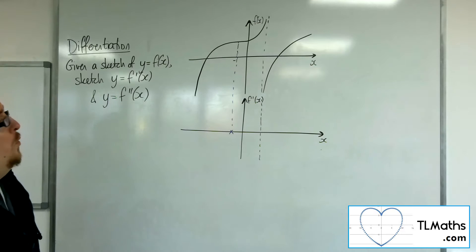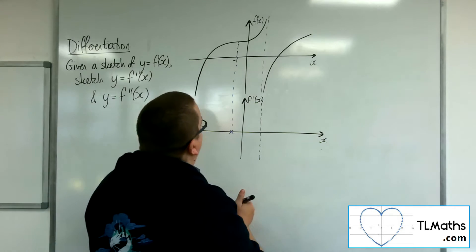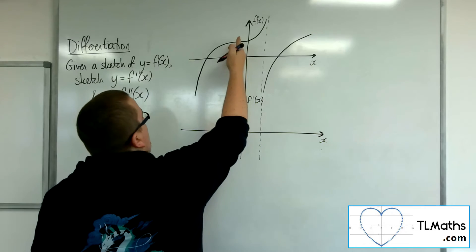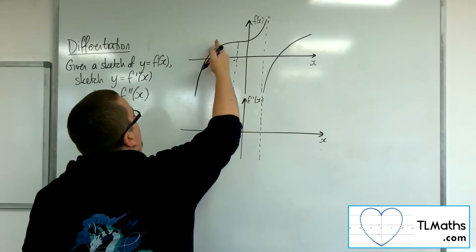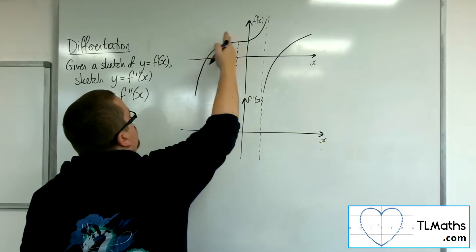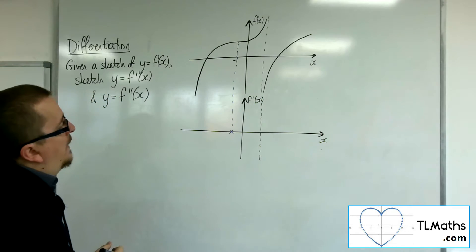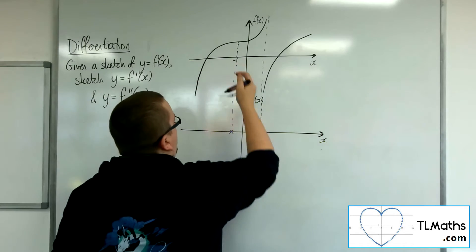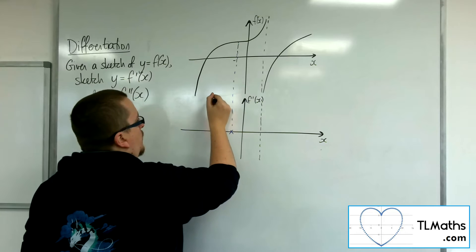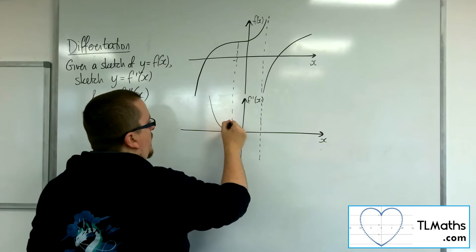So let's see if we can now draw it. So to the left of that stationary point, we've got a positive gradient that's slowing down by the time it gets to minus 1. So we've got a positive gradient, it slows down when we get through to minus 1.